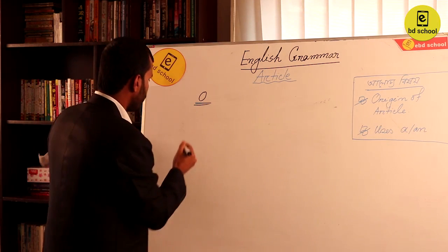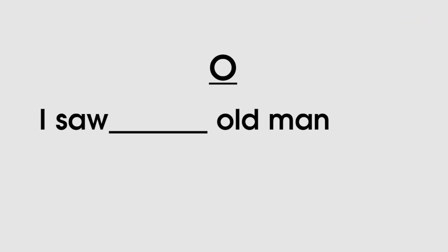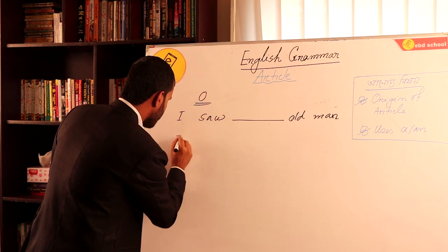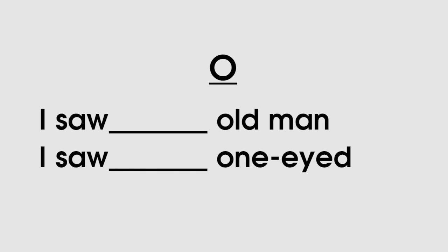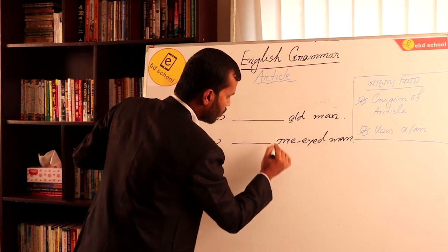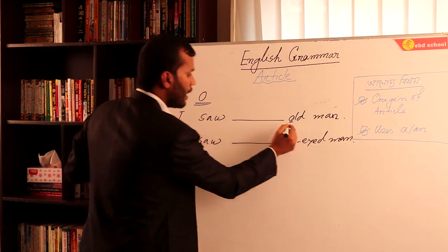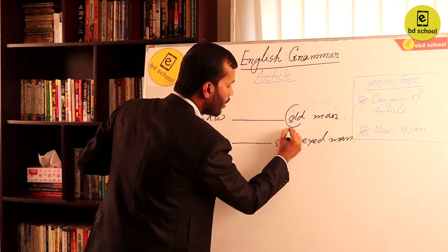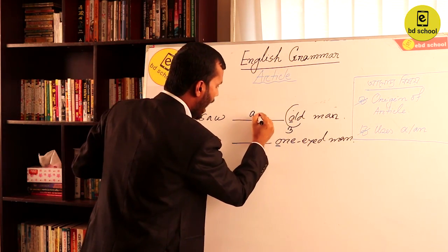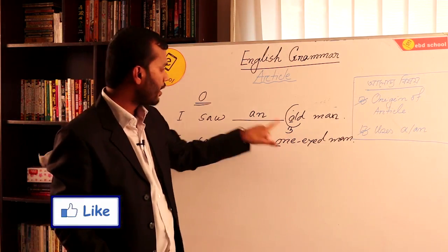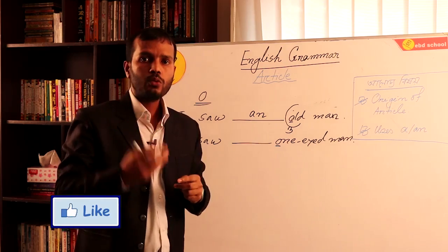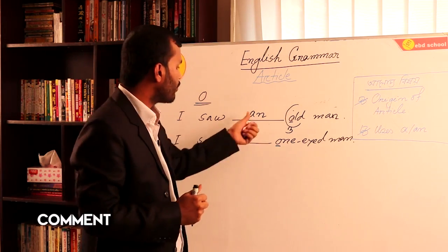For example: 'I saw an old man.' In this sentence, 'old' starts with O, which is a vowel sound. Words starting with a vowel sound take AN. If a word starts with a consonant sound, we use A. Since 'old' starts with a vowel sound, we say 'an old man.'